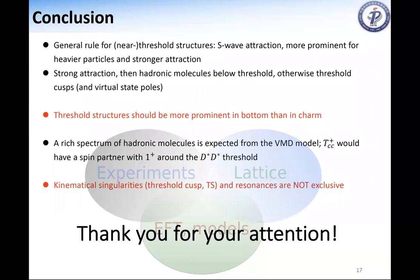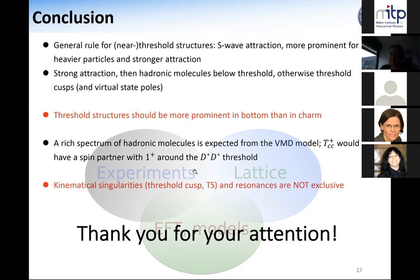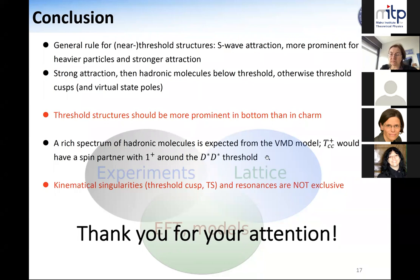In conclusion: it is natural to have near-threshold or threshold structures in heavy hadron spectra, as long as the heavy hadron pair has S-wave attraction. This is a general pattern, but the structure can be different in different reactions — it can be either a peak or a dip, even if the structure comes from the same pole, because it can behave very differently in different reactions due to competition with a zero in the amplitude. As long as we have a prominent near-threshold structure, there is normally a singularity more singular than just a threshold cusp, which can be either a pole or a triangle singularity.